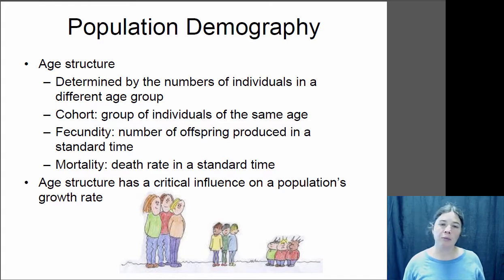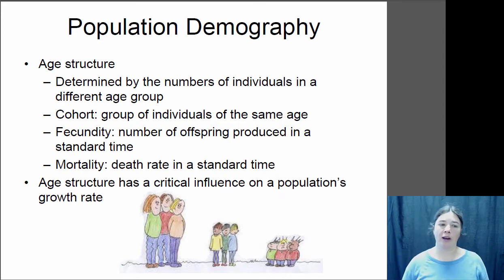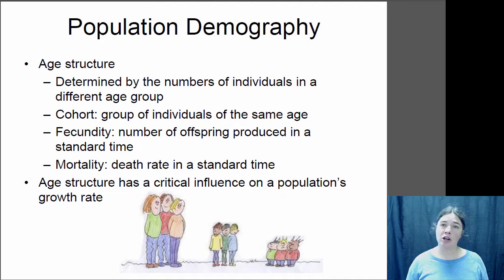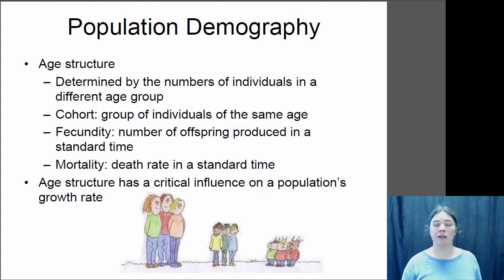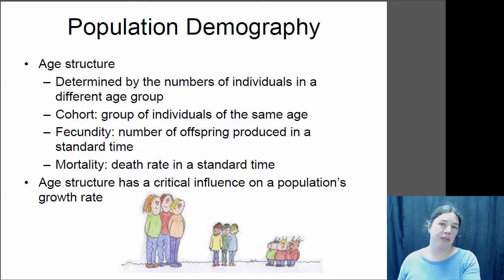Usually with wild animals that have particular breeding seasons, like birds, a cohort will be all individuals born in one summer, and then you can follow that cohort over time. One thing you might want to know about that group is the fecundity — the average number of offspring produced per individual within a given period of time. For example, what's this group of birds' fecundity in their first year? How many babies do they have at age one, two, or three years old?